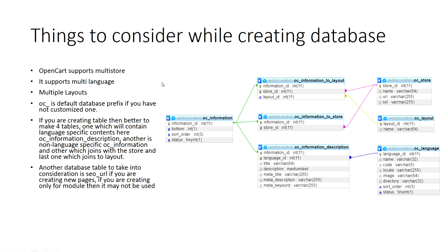Database table schemas — the following are things that need to be taken into consideration while creating the database. OpenCart supports multi-store, multi-language, and multi-layouts, so these three things we need to consider while creating the database. The default database prefix is OC underscore, if you haven't customized it while installing. So while creating the database, don't forget to add the database prefix.